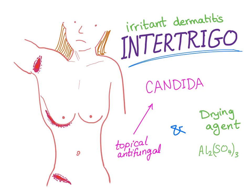Intertrigo occurs in moist, closely opposed skin folds or skin surfaces. That is why the armpit, the inframammary area of the female breast, and the groin are the most common sites. It presents as an irritant dermatitis with tender, brightly erythematous patches.